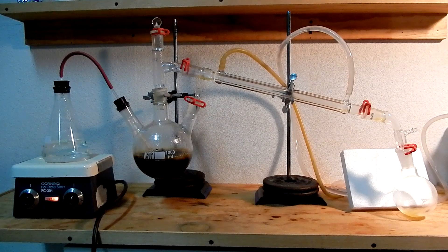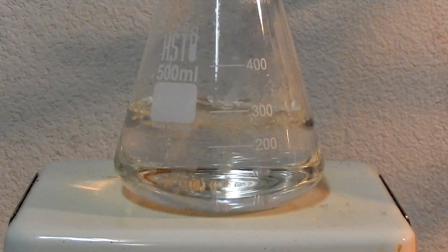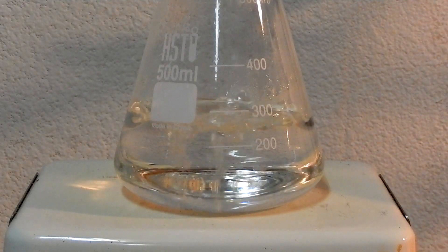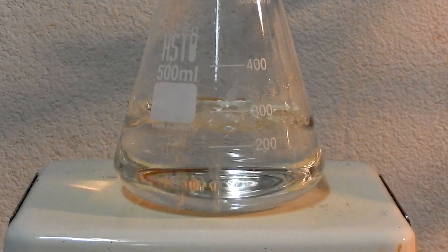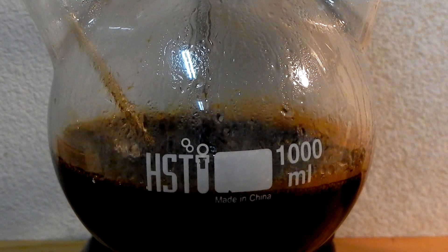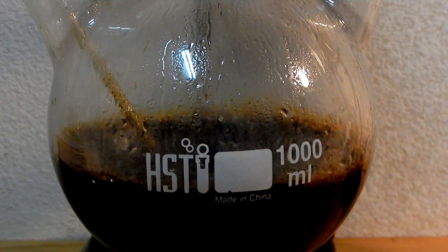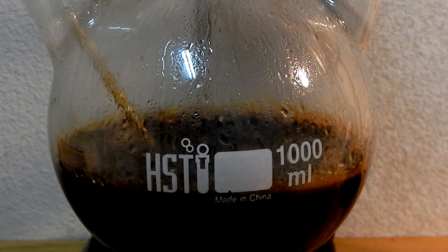Once no more nitrogen is evolved, set up for steam distillation using the following or similar apparatus. The leftmost flask contains distilled water that is boiled to generate steam. The steam travels up the tube and bubbles through the reaction mixture. The resulting steam-vapor mixture is condensed in the condenser and the distillate is stored in the rightmost flask.